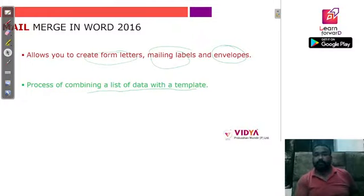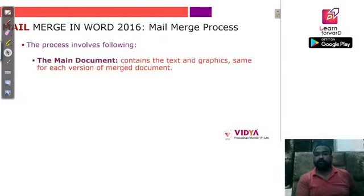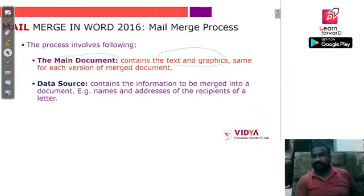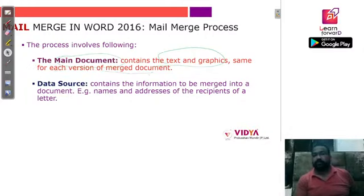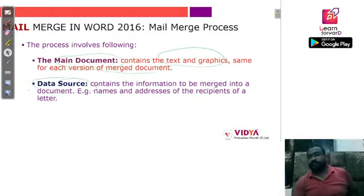Mail merge is the process of combining a list of data with a template. This process involves basically two things. The first one is the main document, which consists of the text and graphics — your invitation letter content — that is the same for each version of the merged document.